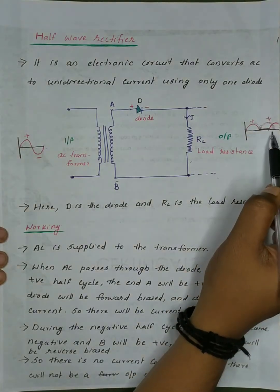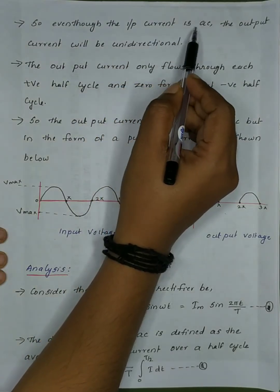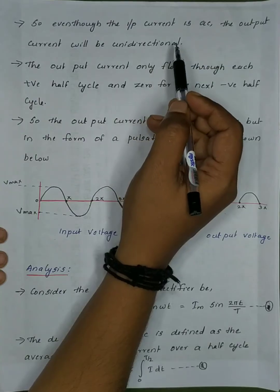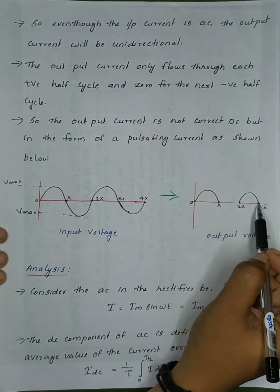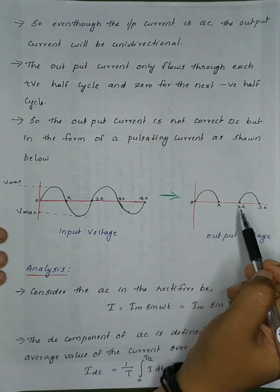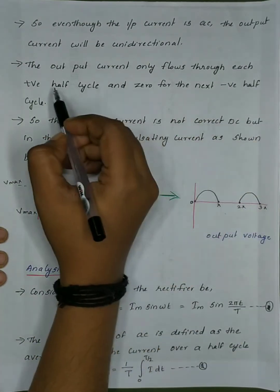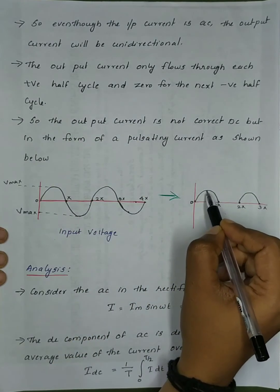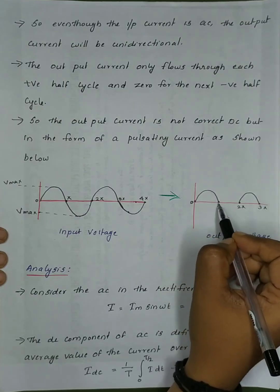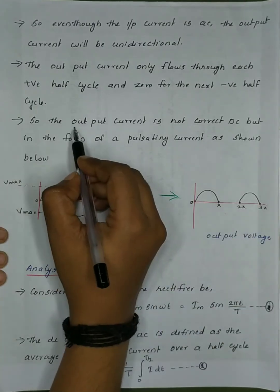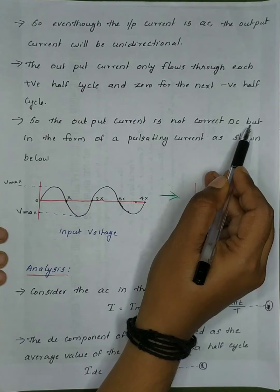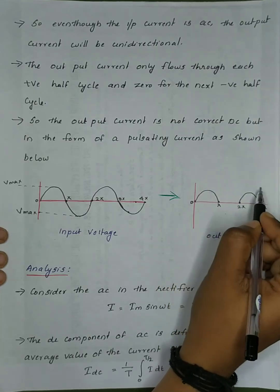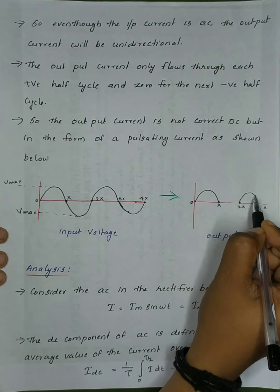There will not be an output current during the negative half cycle. So even though the input current is AC, the output current will be unidirectional. The output current only flows through each positive half cycle and is zero for the negative half cycle. So the output current is not pure DC, but in the form of a pulsating current.